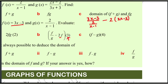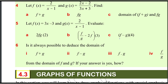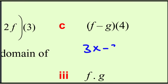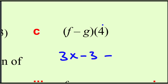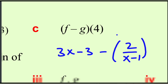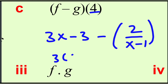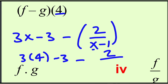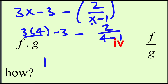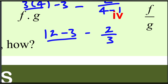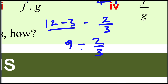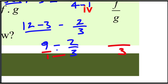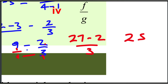F minus G of 4: F is 3x minus 3, G is 2 over x minus 1. At x equals 4: 3 times 4 minus 3, which is 12 minus 3 equals 9. Minus 2 over 4 minus 1 equals 2 over 3. So 9 minus 2 over 3, giving 27 over 3 minus 2 over 3 equals 25 over 3.